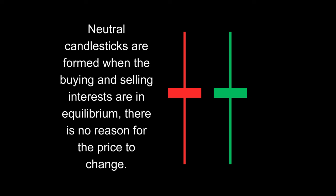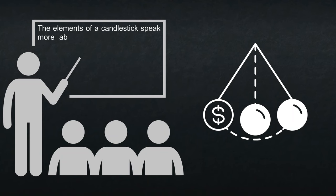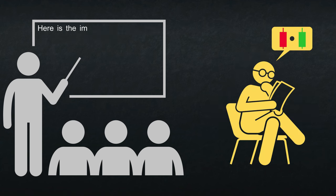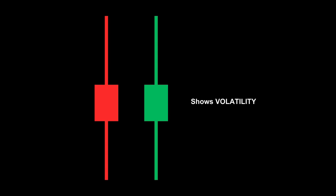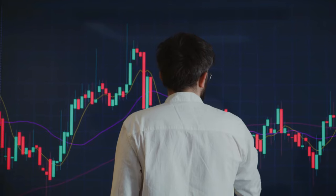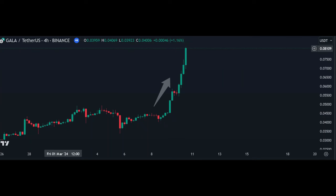The elements of a candlestick speak more about the momentum in the market. When bodies become taller, it shows an increase in momentum, while when bodies become smaller or shorter, it shows slowing momentum. The length of a shadow helps determine volatility — the entire range of price fluctuation. A short shadow indicates a stable market with little instability. A strong trend moving quickly in one direction usually shows candlesticks with only small shadows, since one side of the market dominates.